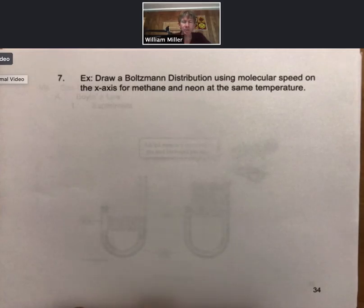We're going to be drawing a Boltzmann distribution using molecular speed on the x-axis for methane and neon at the same temperature.